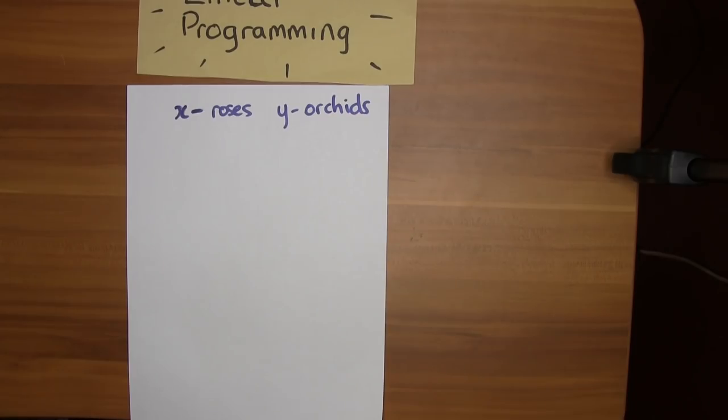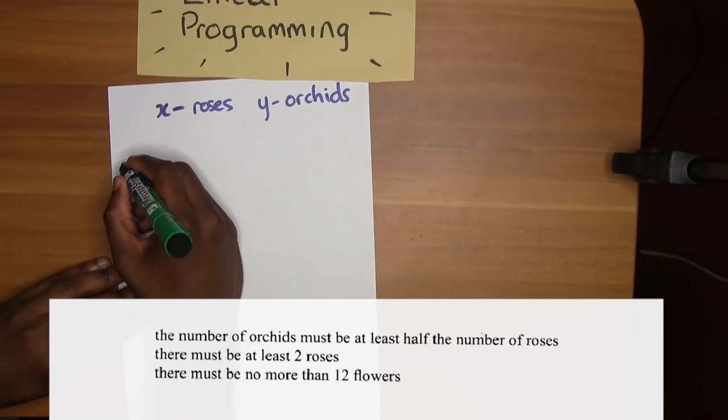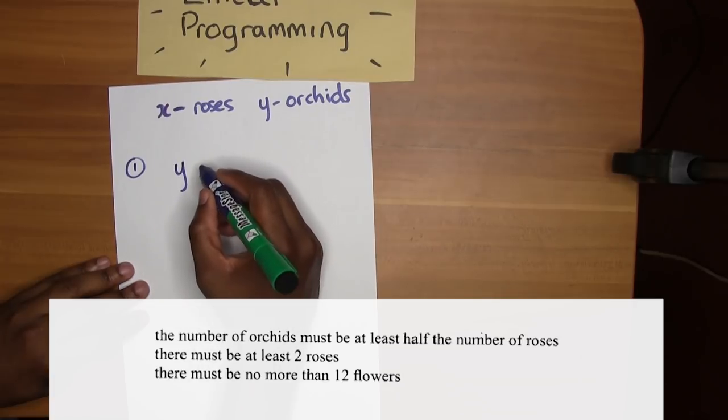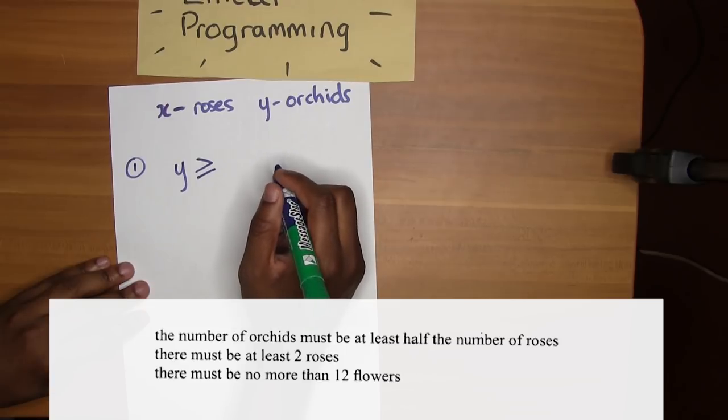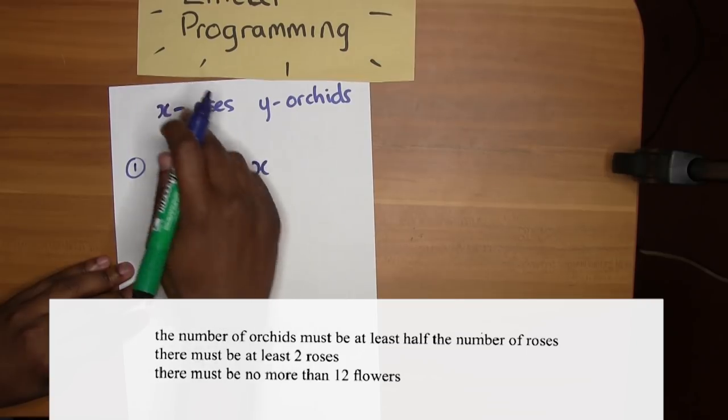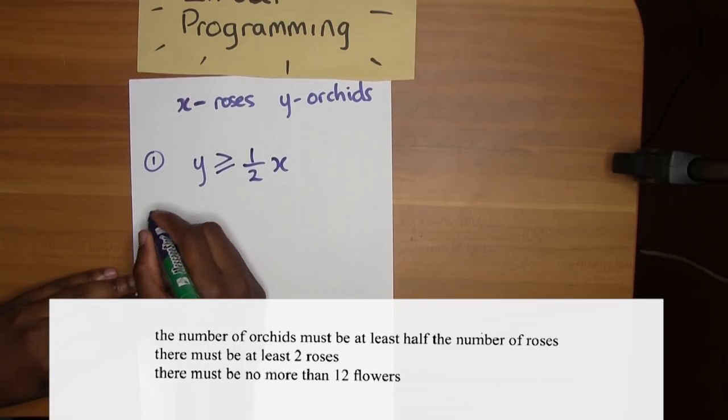The first constraint says the number of orchids must be at least half the number of roses. So the number of orchids, that's y, must be at least half. At least half means it can be greater than or equal to, so let's put an equal sign. The number of orchids must be at least half the number of roses, half the number of roses. So y is greater than or equal to half x.